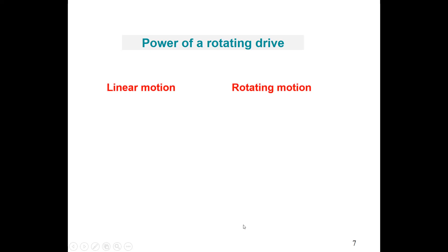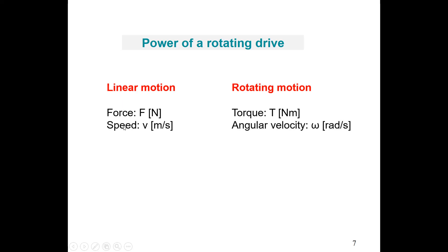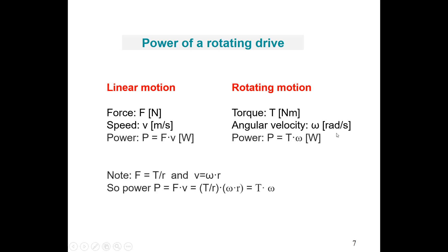Now let's compare a linear motion system with a rotating motion system. In linear motion systems we talk about force F in newtons; in rotating motion systems we talk about torque T in newton meters. In linear motion we talk about speed V in meters per second; in rotating motion we talk about angular velocity omega in radians per second. The power in a linear motion system is P equals force times speed, F times V. In a rotating system, power equals T times omega — the torque multiplied by the angular velocity.